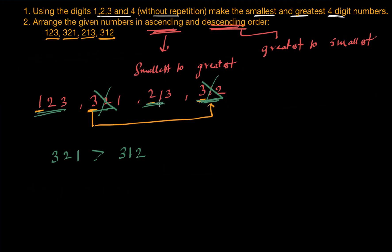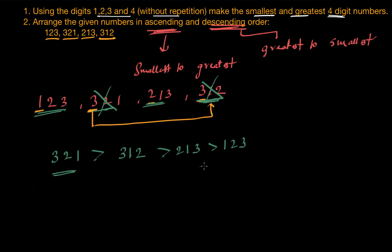Now comparing 123 and 213 — this is very simple. The answer is 213 comes before 123 in descending order, since 213 is greater than 123. So the order from greatest to smallest is: 321, 312, 213, 123.